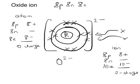Note how the name of the negative ions changes: from oxygen to oxide, chlorine to chloride, whereas the name of the metal ions doesn't change — still a magnesium ion or a sodium ion.